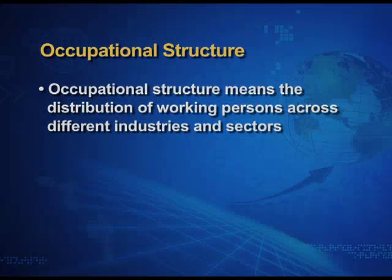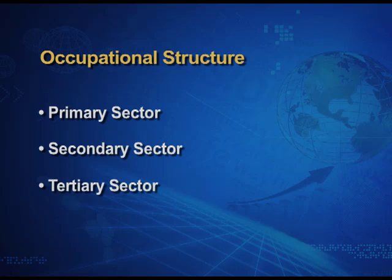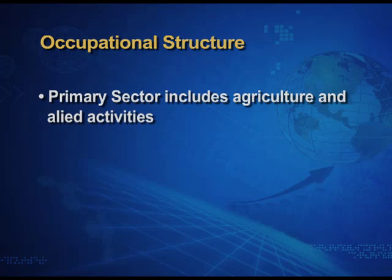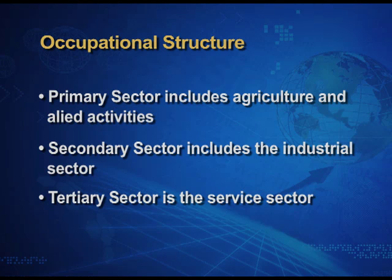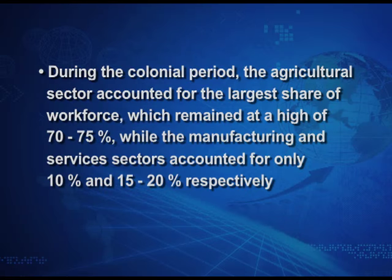Occupational structure means the distribution of working persons across different sectors — that is, the primary, secondary, and tertiary sectors — and the percentage of population engaged in each. The primary sector includes agriculture and allied activities, the secondary sector includes the industrial sector, and the tertiary sector is the service sector. During the colonial period, the agricultural sector accounted for the largest share of the workforce, which remained at a high of 70 to 75 percent.